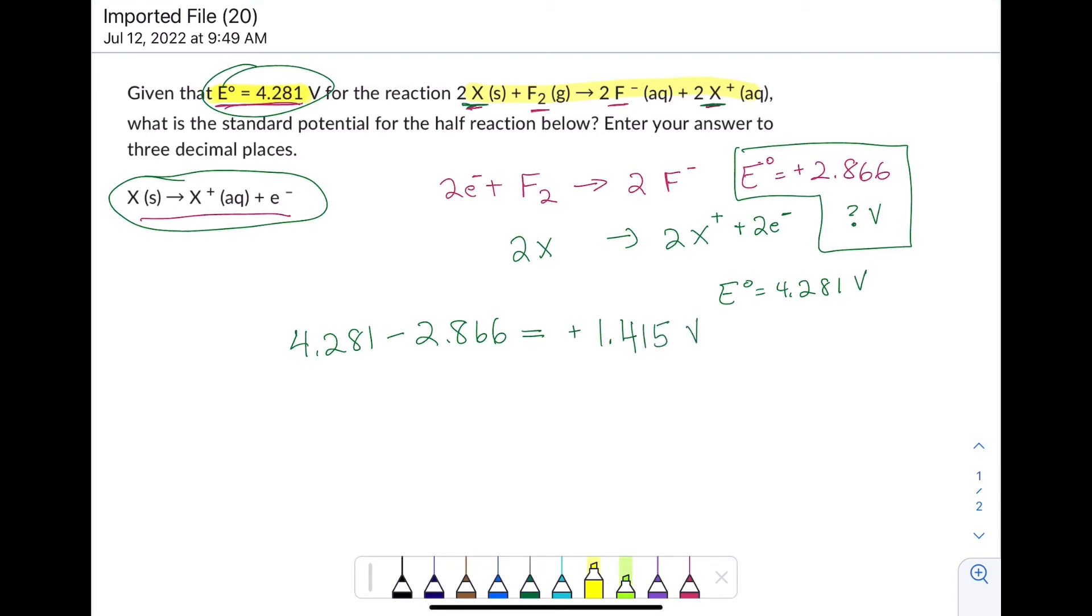A couple of comments. The fact that I needed two of these to balance with the fluorine does not change the cell potential of that half reaction.